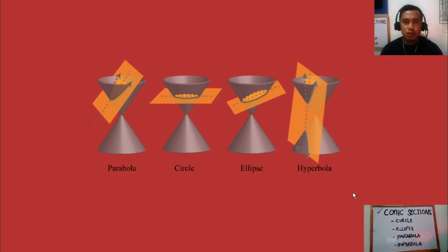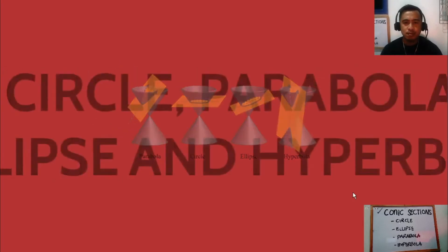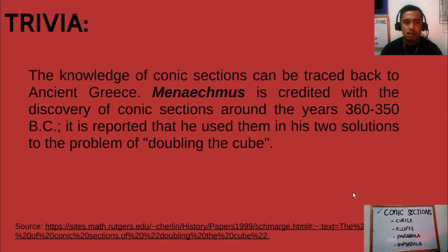Let us have some trivia about conic sections. The knowledge of conic sections can be traced back to ancient Greece. Menaechmus is credited with the discovery of conic sections around the years 360 to 350 BC. It is reported that he used them in his two solutions to the problem of doubling a cube.